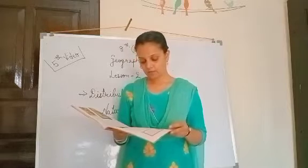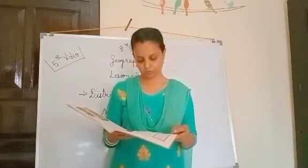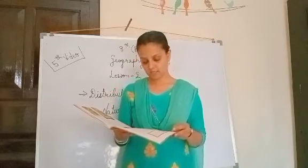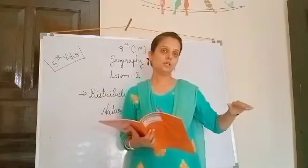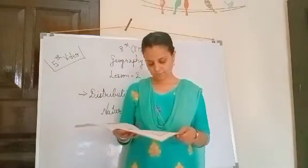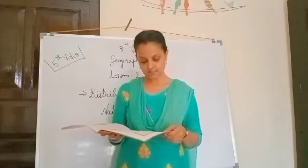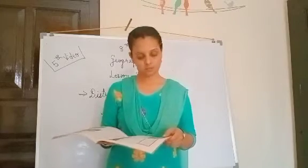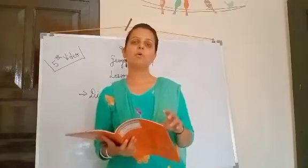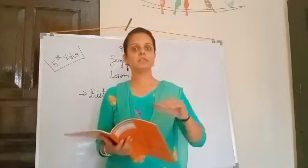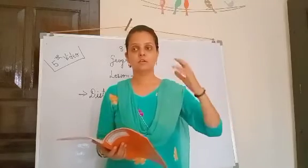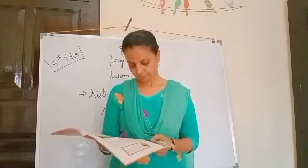The forests are associated with areas having abundant water supply. As the amount of moisture decreases, the size of trees and their density also reduces — jahaan par paani kam hone lagta hai, wahaan par grow karne ki capacity bhi kam hoti jayegi. Short, stunted trees and grasses grow in the region of moderate rainfall, forming the grasslands of the world.